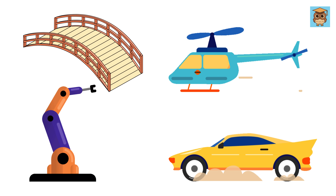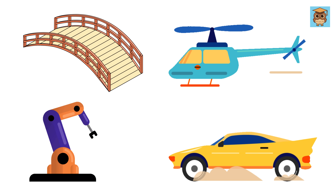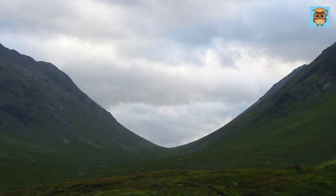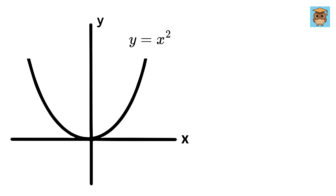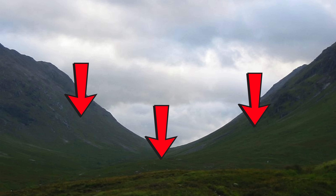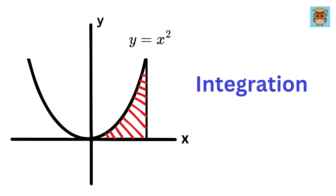Real-world problems often involve more complex shapes that don't have straight edges. For example, imagine a U-shaped valley, which is similar to the graph of Y equals X squared, and you want to find the area of the land beneath that valley. For cases like these, geometry alone doesn't help. This is where calculus, specifically integration, comes into play.